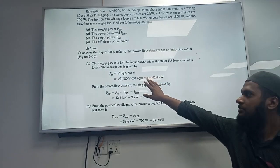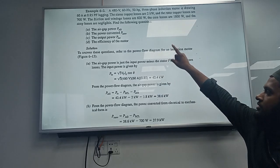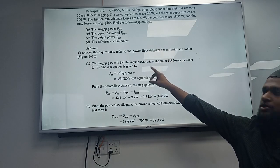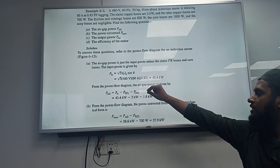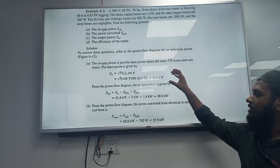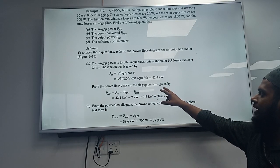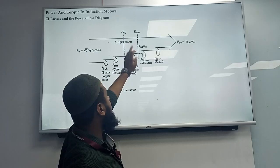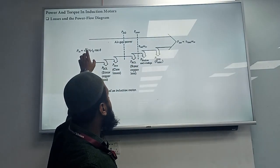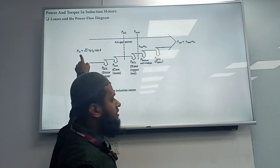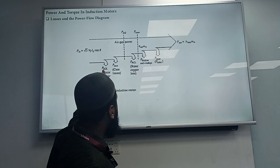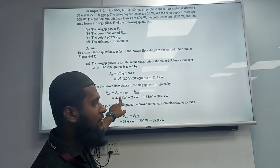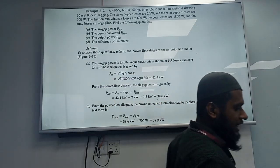The input power is Pin = √3 × VL × IL × 0.85 lagging. It is 0.85, so this is 42.4 kilowatts. From the power flow diagram, the air gap power is given by PAG = Pin - PSCL - Pcore loss, which equals 38.6 kilowatts.